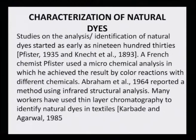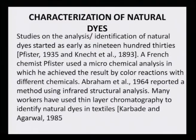Characterization of dyes — particularly natural dyes — has a long history. Studies on the analysis and identification of natural dyes started as early as the 1930s when French chemist Fister used microchemical analysis, achieving results by color reactions with different chemicals. Abraham et al. in 1964 reported a method using infrared structural analysis. Many workers have used thin layer chromatography to identify natural dyes in textiles.